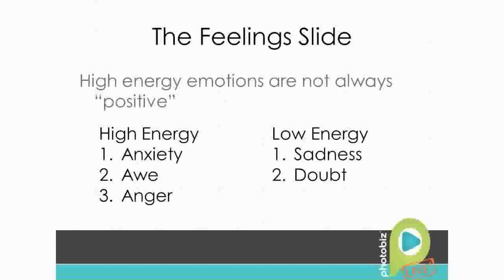Number one and number three — anxiety and anger — are kind of hard to create content towards. You don't necessarily want to make your customers anxious or angry unless you're focusing that anger on something external. The second one, awe, is where our word 'awesome' comes from — something that inspires awe. And of course, we want to make awesome web content. It all kind of dovetails in.